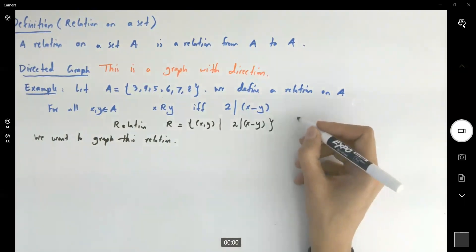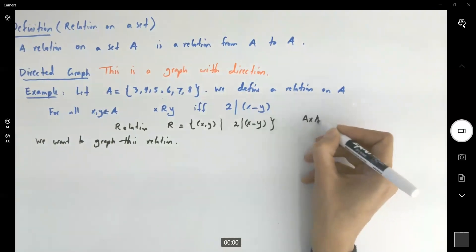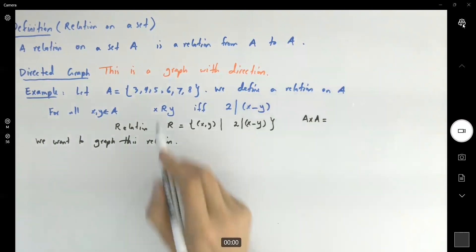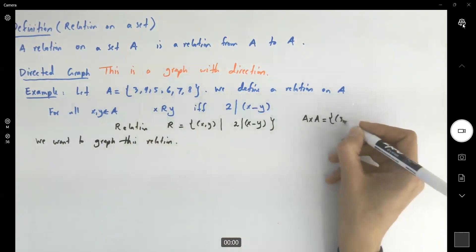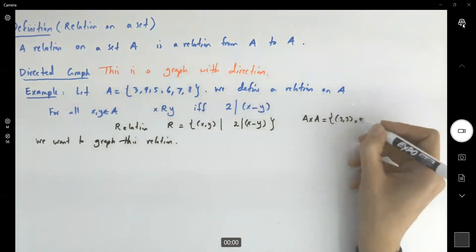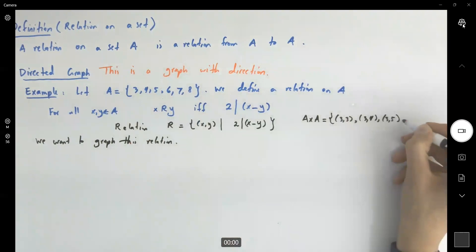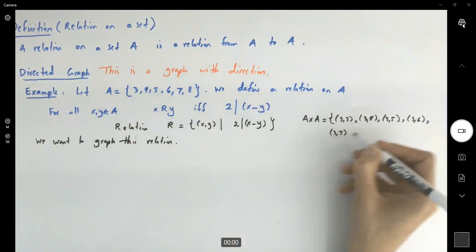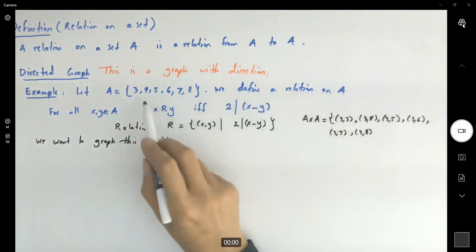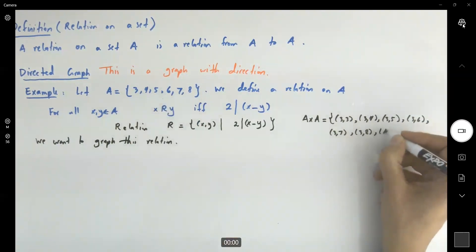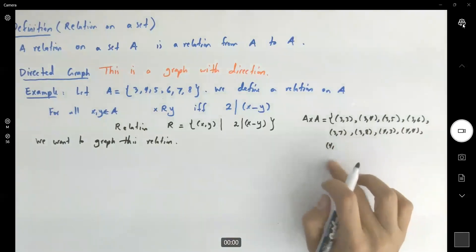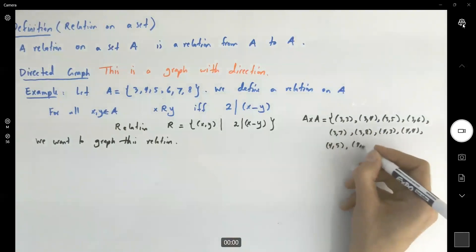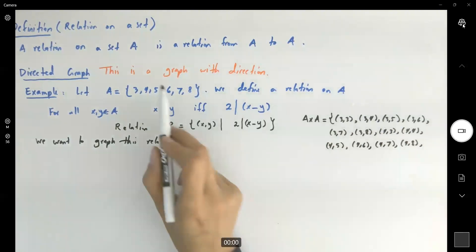A Cartesian product with A is going to be 3,3, 3,4, 3,5, 3,6, 3,7, 3,8. And we're going to continue that for each of these members: 4,3, 4,4, 4,5, 4,6, 4,7, 4,8.